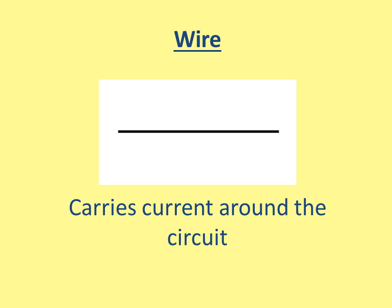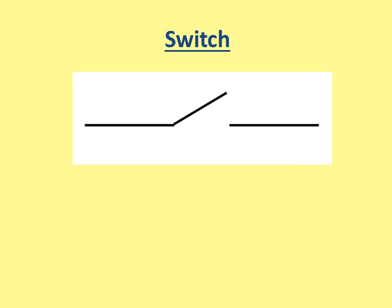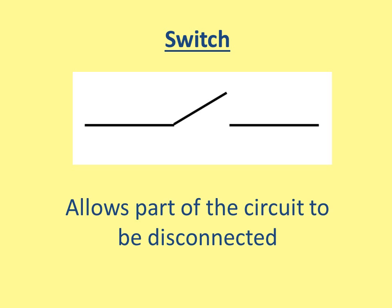This is a wire. Wires carry current around the circuit and they must be straight — you must use a pencil and a ruler. This is a switch. A switch allows part of the circuit to be disconnected. Everyone knows what a switch is for.